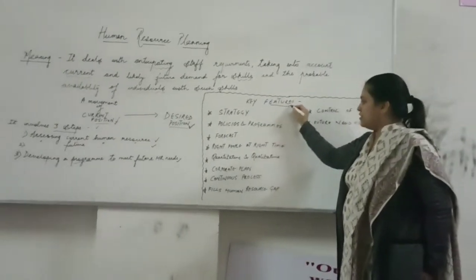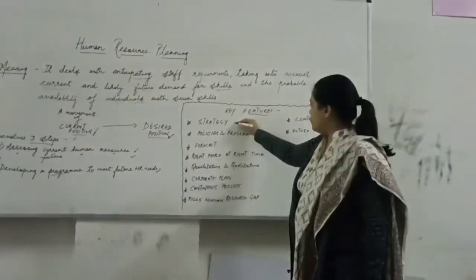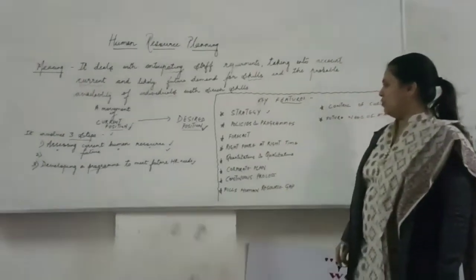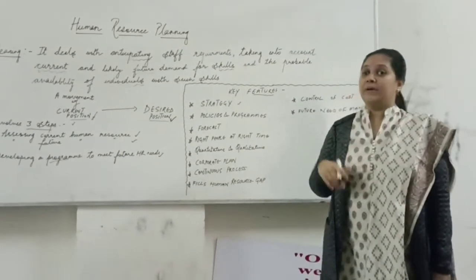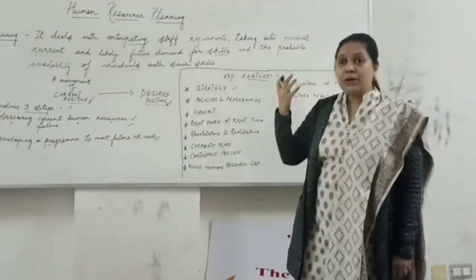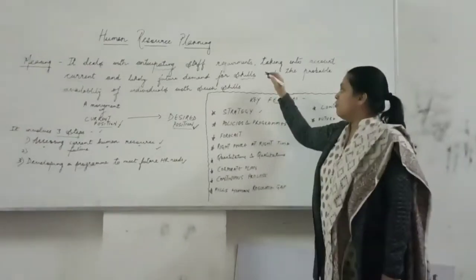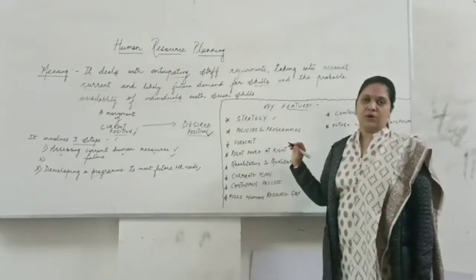There are key features or basic features which are involved. First is strategy. What kind of strategy is involved? What kind of policy? Because every organization holds a different policy. What kind of policy you will be employing for holding this human resource, for employing the people in the organization.